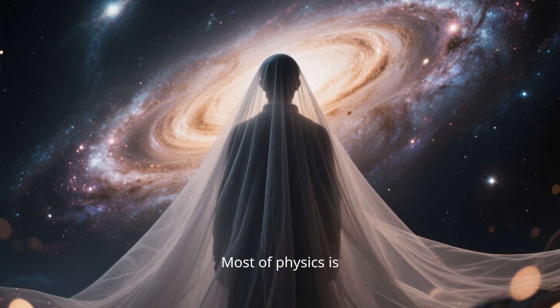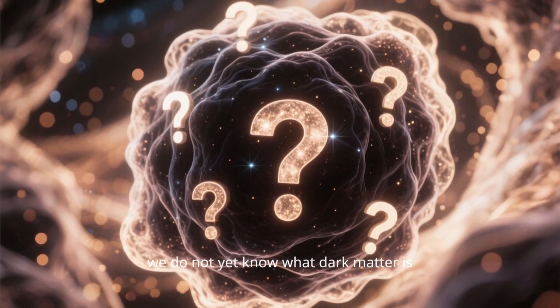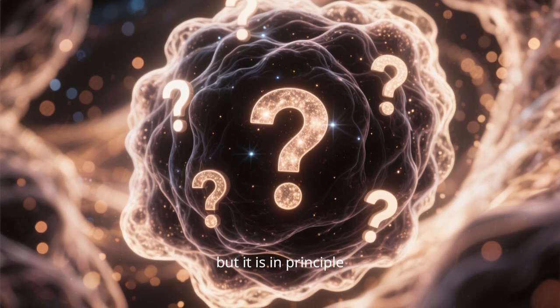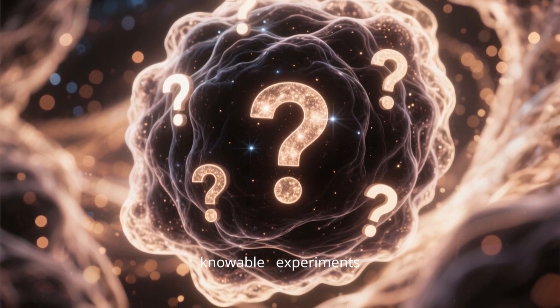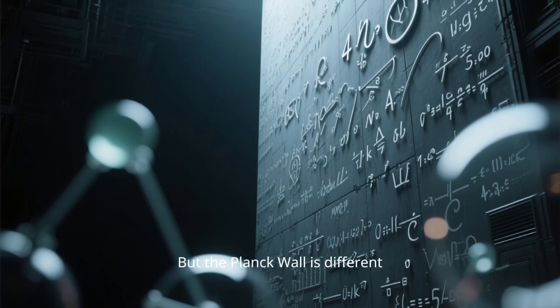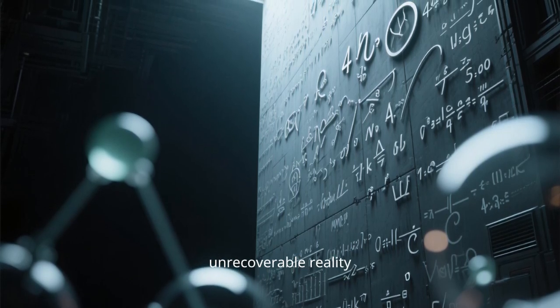Most of physics is unknown, but knowable. For example, we do not yet know what dark matter is, but it is in principle knowable. Experiments could reveal it. But the Planck wall is different. It is a boundary between knowable physics and, in principle, unrecoverable reality.